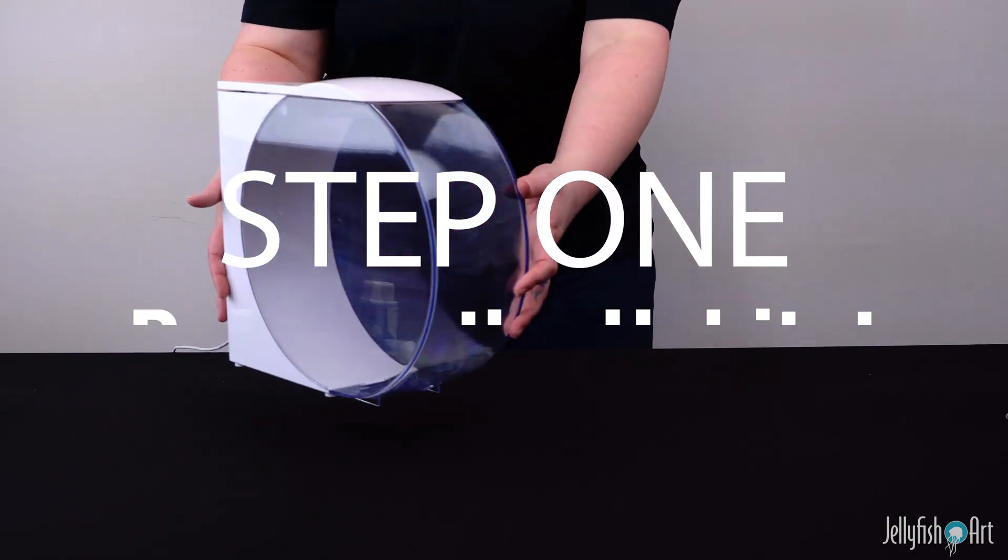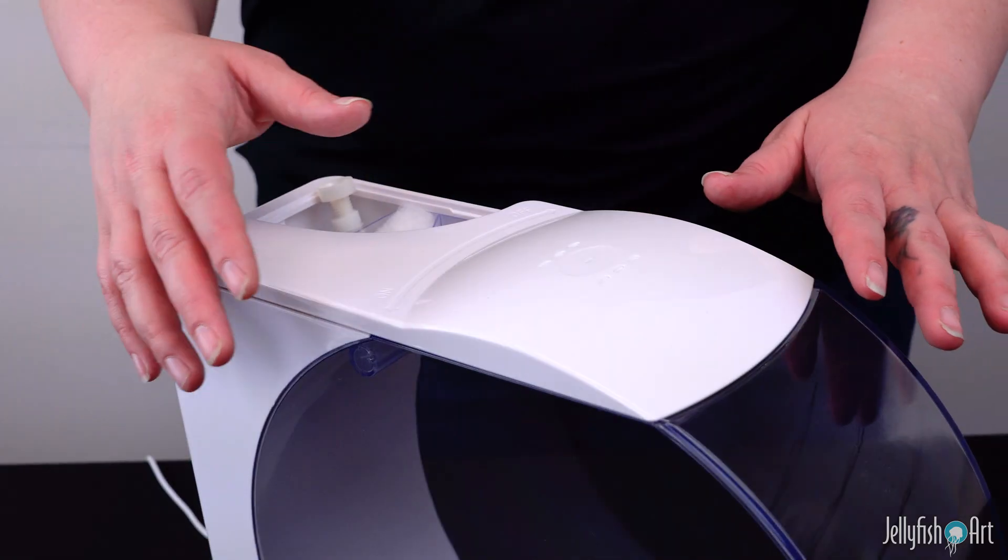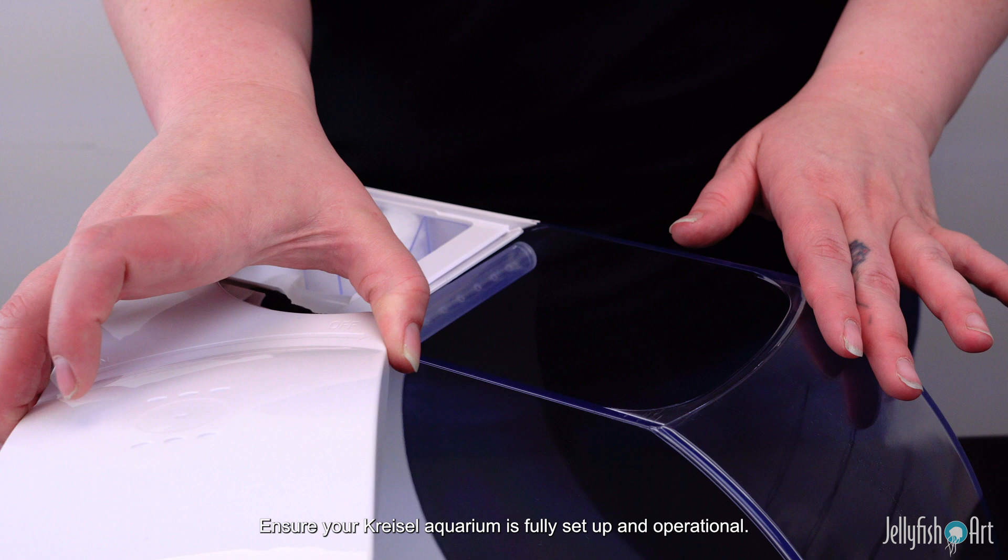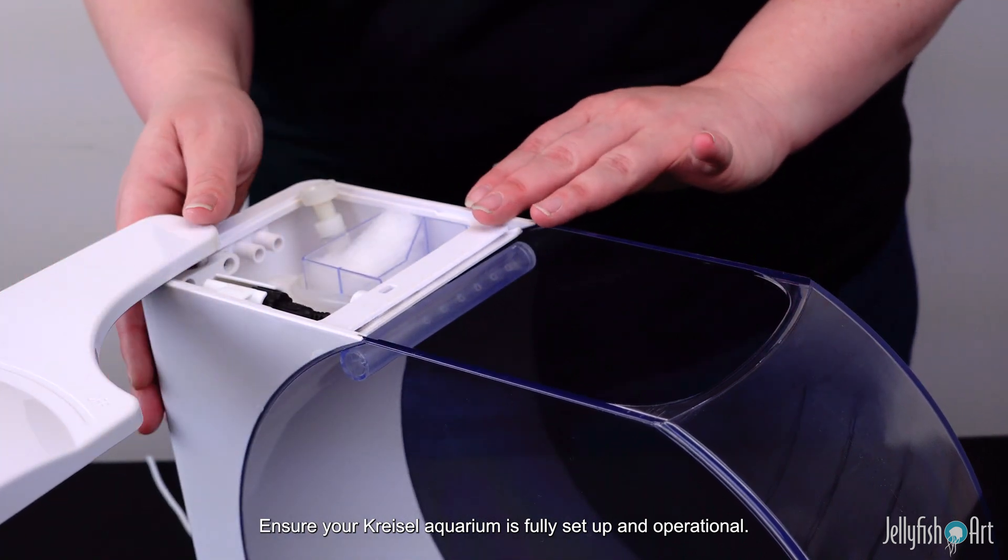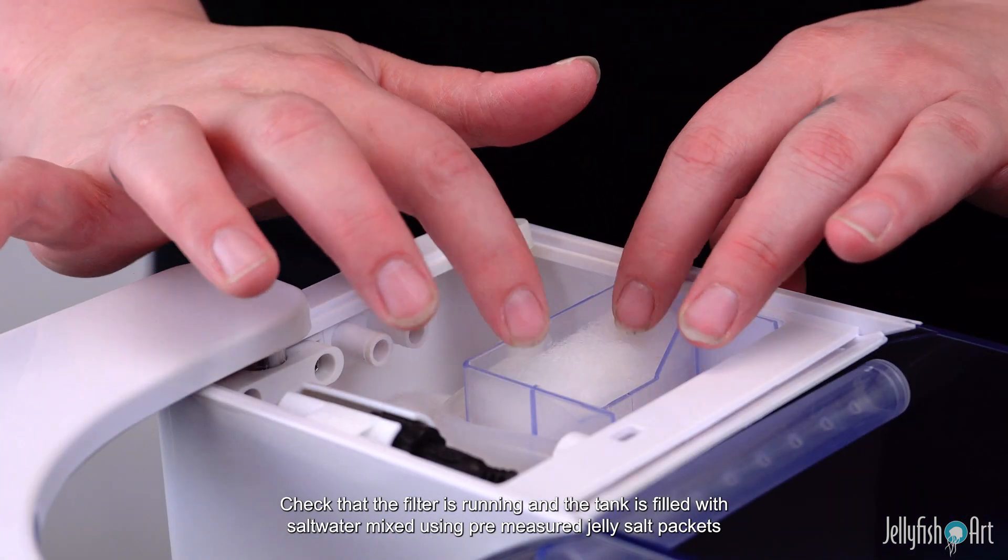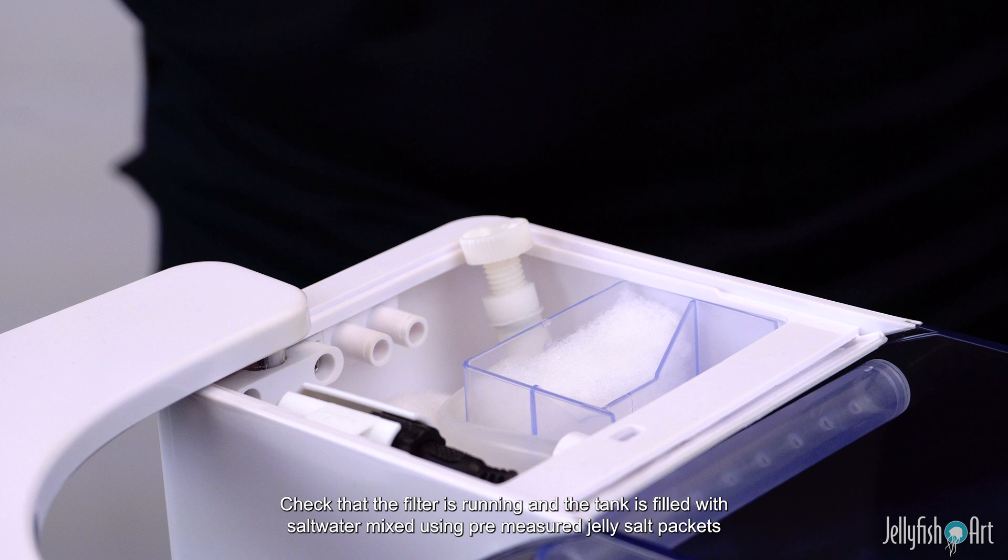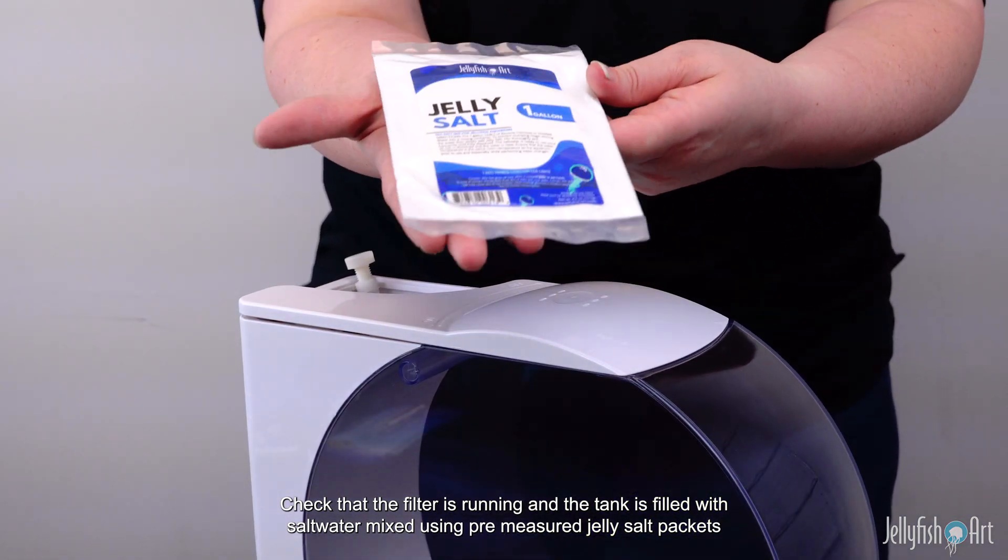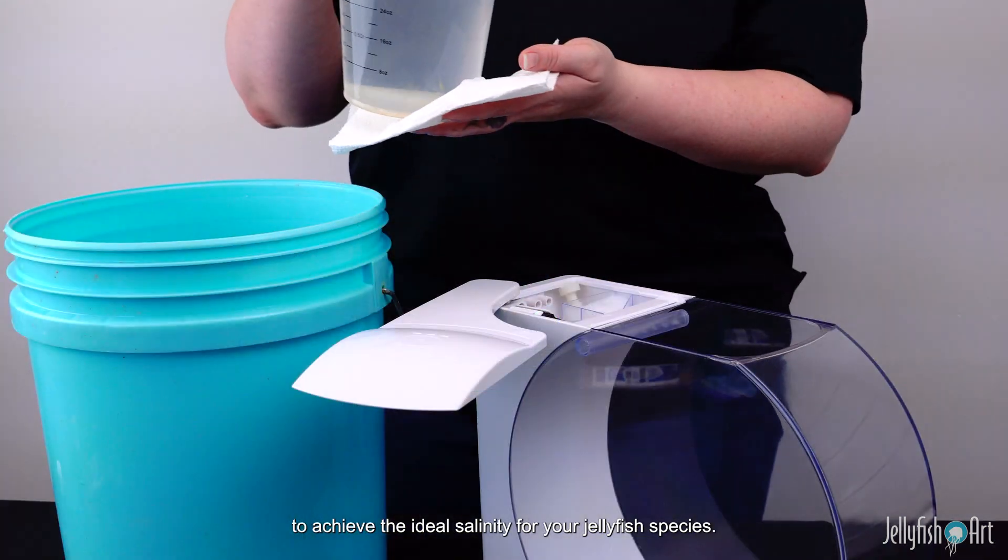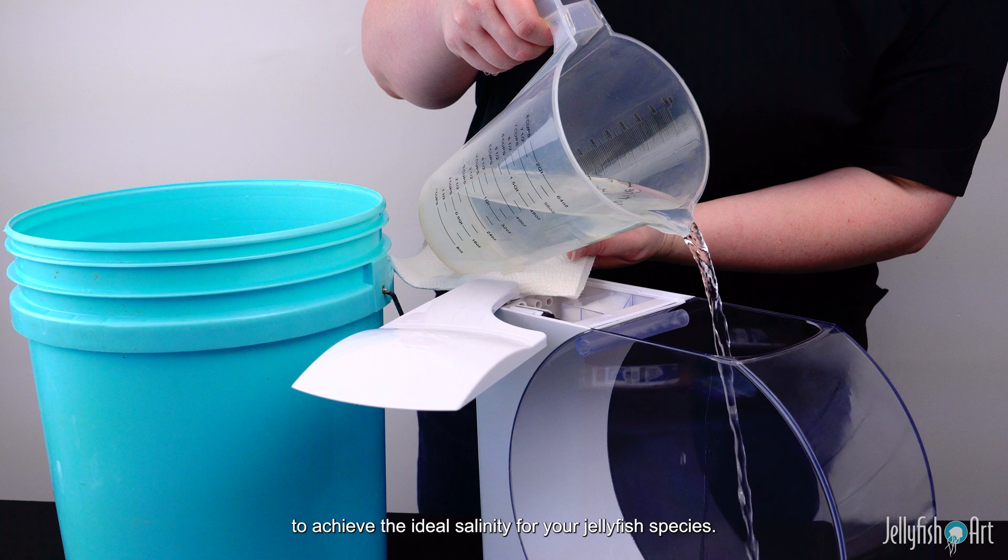Step 1: Prepare the habitat. Ensure your Kreisel Aquarium is fully set up and operational. Check that the filter is running and the tank is filled with salt water mixed using pre-measured jelly salt packets to achieve the ideal salinity for your jellyfish species.